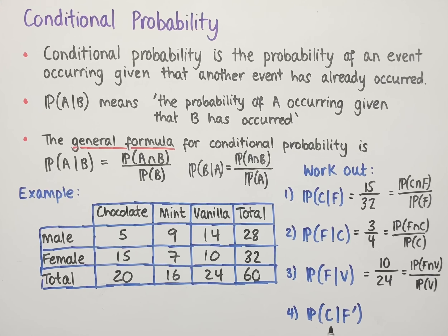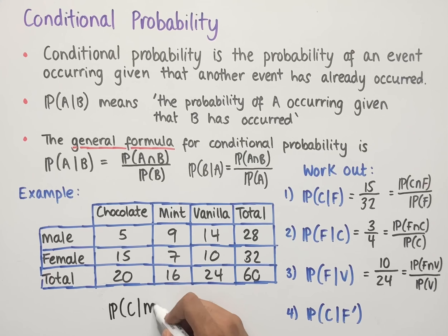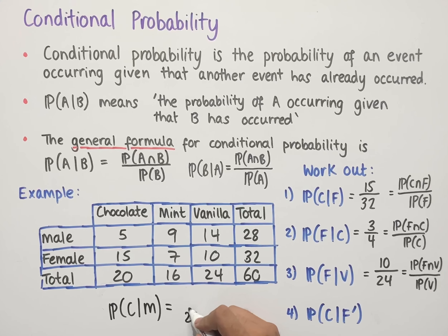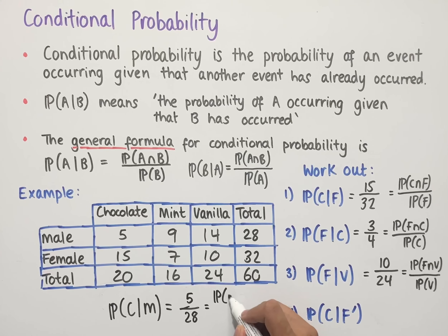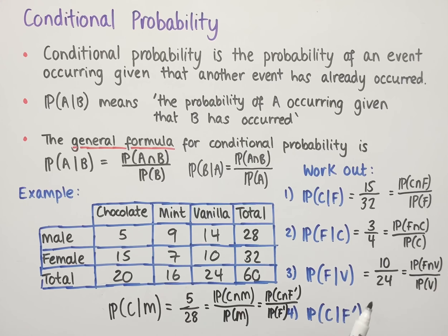The final question asks for the probability of chocolate given female complement. Female complement is simply male. So this is the probability of someone choosing chocolate given they're male. There are 28 males in total, and of those 28, five chose chocolate, giving a probability of 5 over 28. This equals the probability of chocolate intersect male divided by the probability of male — or equivalently, chocolate intersect female complement divided by the probability of female complement.